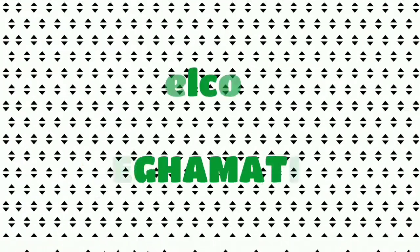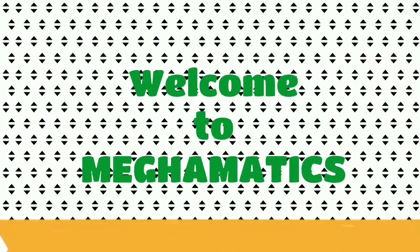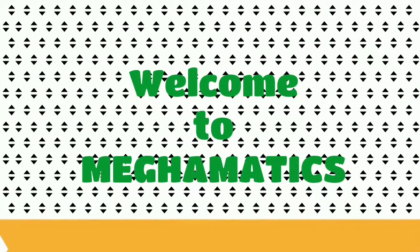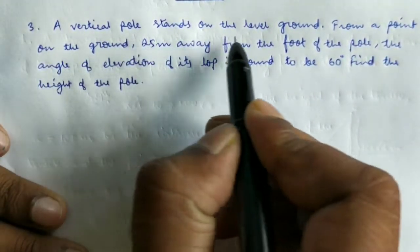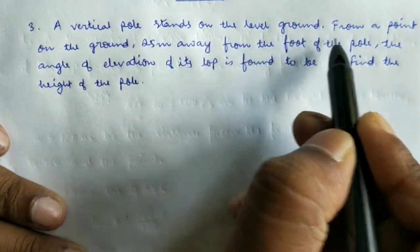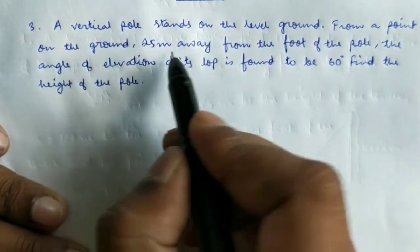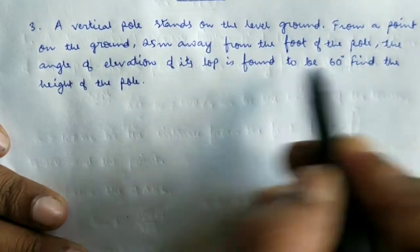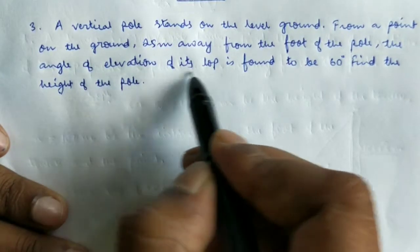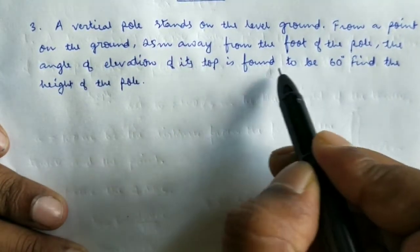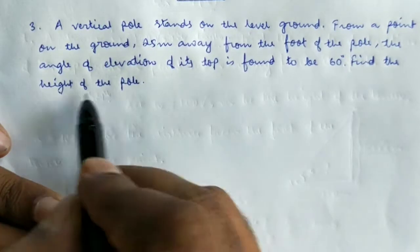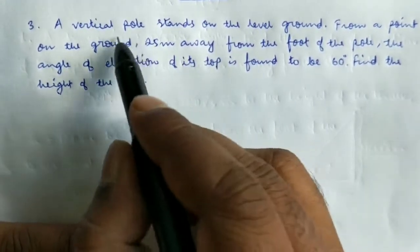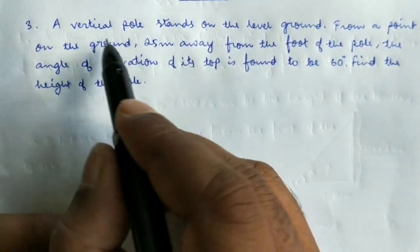Good morning everyone. In this video we are going to learn one more question from the chapter 'Some Applications of Trigonometry.' The question is: a vertical pole stands on the level ground; from a point on the ground 25 meters away from the foot of the pole, the angle of elevation of its top is found to be 60 degrees. Find the height of the pole.